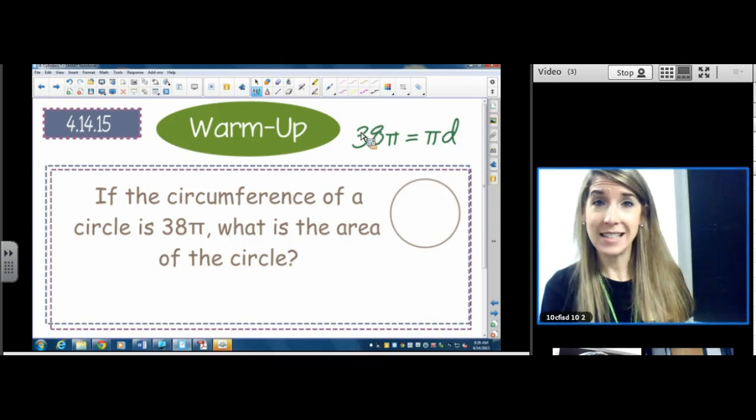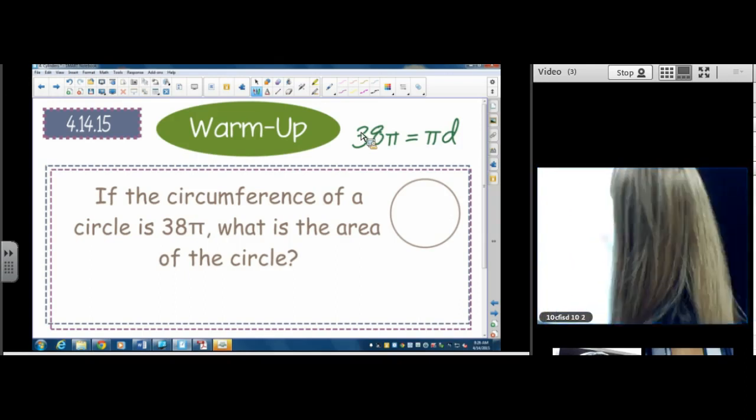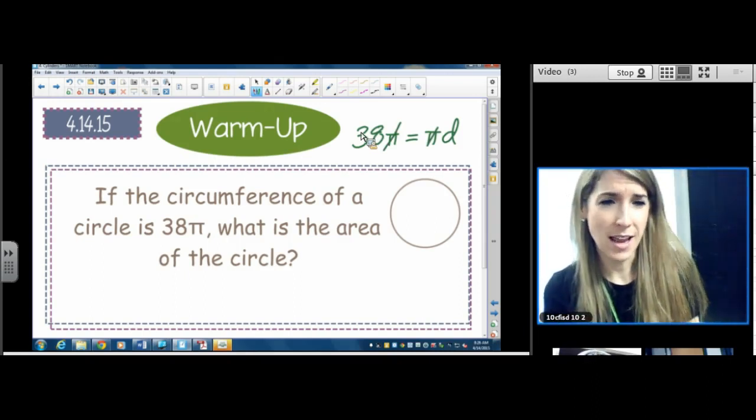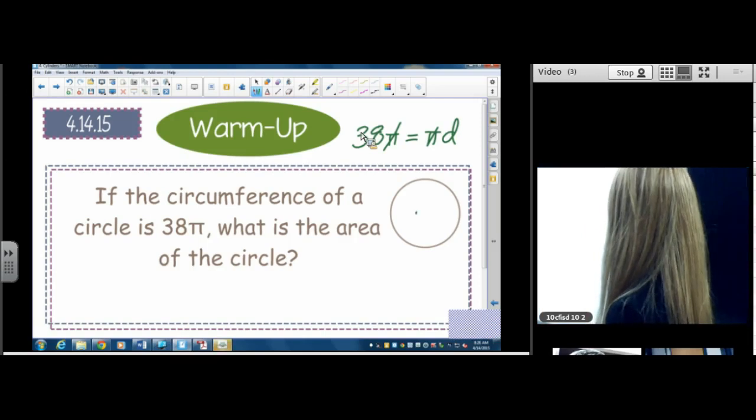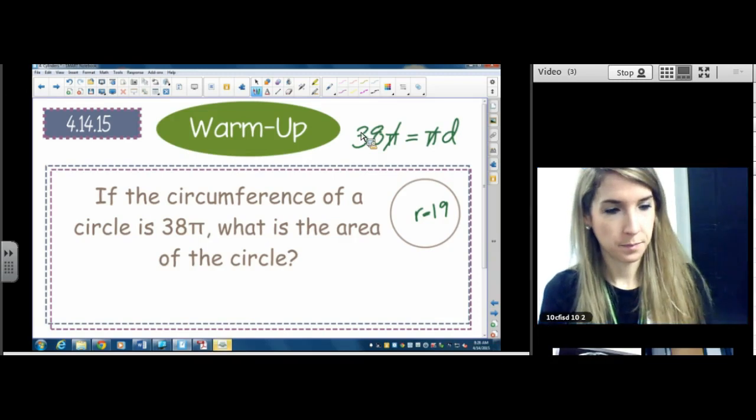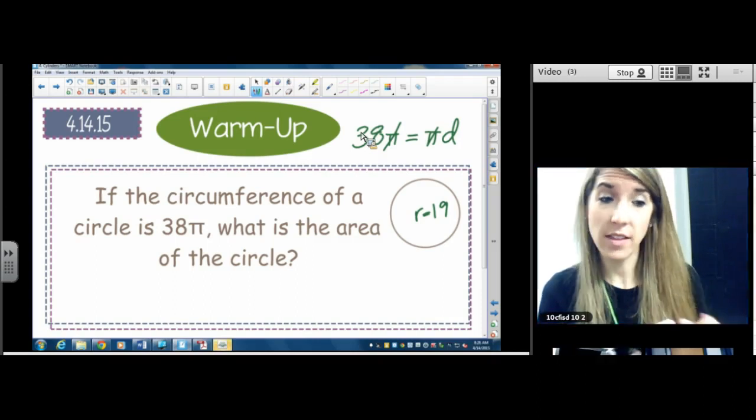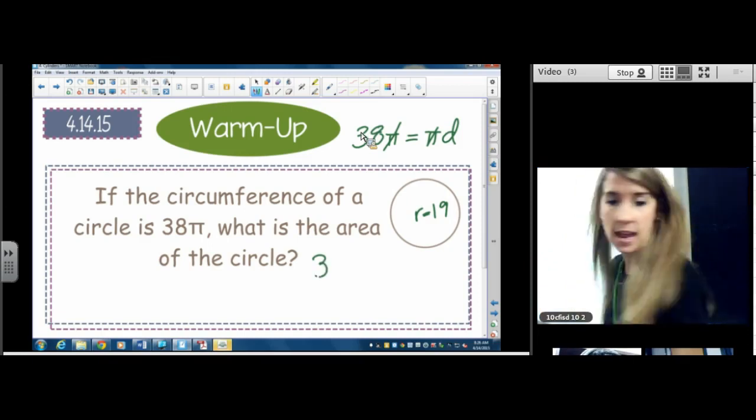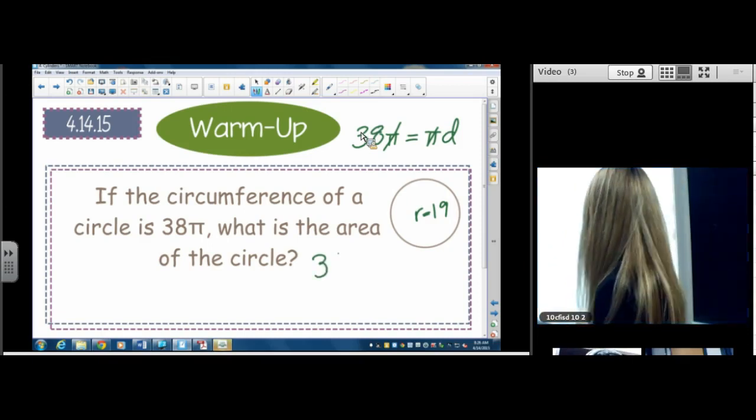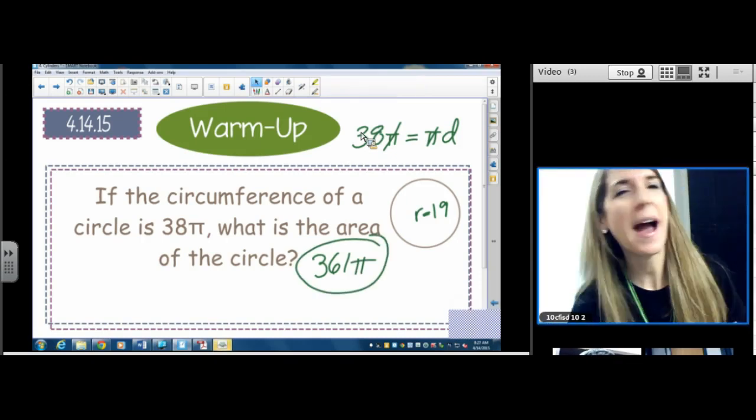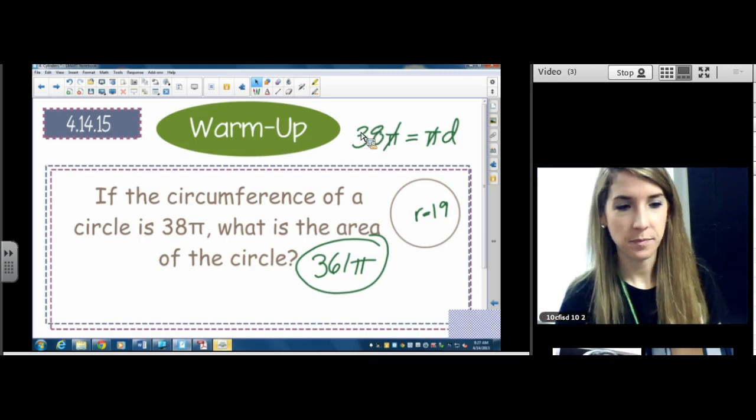but I'm just going to grab the πd one because it makes it so obvious that the π is cancelled. And the diameter is 38. Once we know that the diameter is 38, we know the radius. And now we can find the area of our circle. What is the area of our circle? So it's πr², you square the 19, don't square the π. You square the 19 and you get 361π. We don't square the π either. π is not a unit, π is a number.